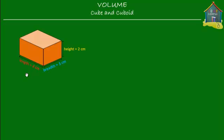What I've got here is a cuboid that has a length of 4 centimeters, a breadth of 3 centimeters, and a height of 2 centimeters, and I want to find out the volume of this cuboid. We learned in a previous lesson that all solid objects are made of unit cubes.